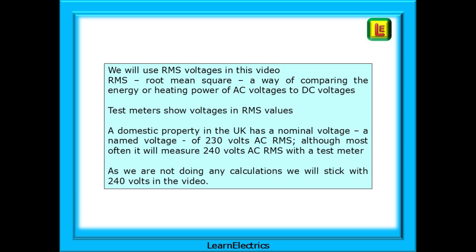A domestic property in the UK has a nominal voltage, a named voltage, of 230 volts AC RMS, although most often it will measure a maximum of around 240 volts AC RMS when tested with your meter. As we are not doing any calculations, we will stick with 240 volts in the video.